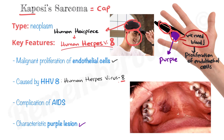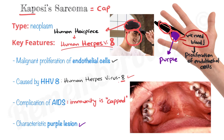The final feature to remember is that Kaposi's sarcoma is a complication of AIDS. AIDS is acquired immune deficiency syndrome, meaning there is a deficiency in immunity — we can say the immunity is 'capped'; it's not at its full potential. This is how we relate 'cap' or Kaposi's sarcoma to AIDS, in which the immunity is capped.